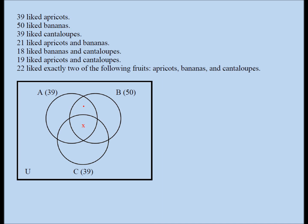If the center is x, then the apricots-and-bananas only region has to be 21 minus x. The bananas-and-cantaloupes only region has to be 18 minus x. And the apricots-and-cantaloupes only region has to be 19 minus x. The last statement tells me these three values should sum to 22, so I'm going to set up an equation and solve for x.